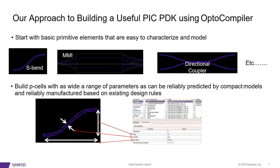Our approach to building a useful PDK using OptoCompiler: instead of black-boxing elements and having more complicated elements that users stitch together, we start with very primitive elements that are easy to characterize and model. Examples from the OptoDesigner PDK include bends, straights, turns, MMIs, directional couplers, and so on. These are things where there's not a lot of value for the customer to design their own — as long as we know it works, they'll use it and move on to more interesting parts of the design.